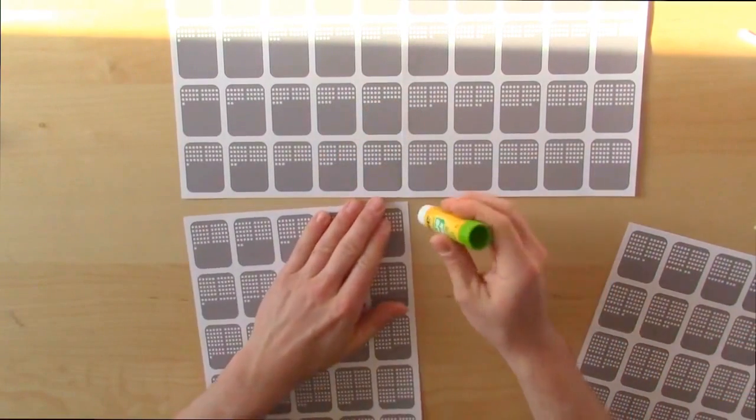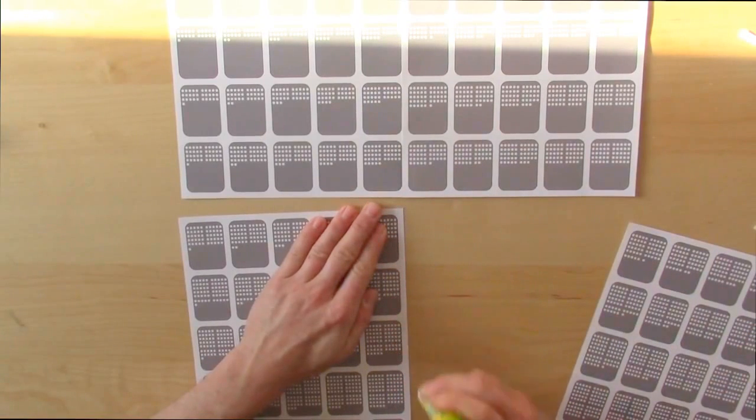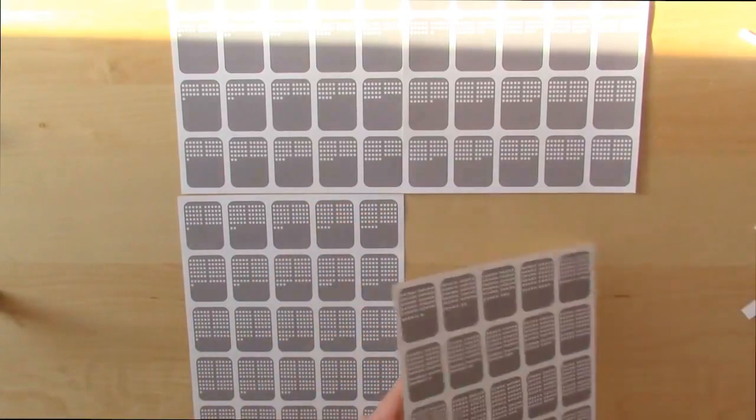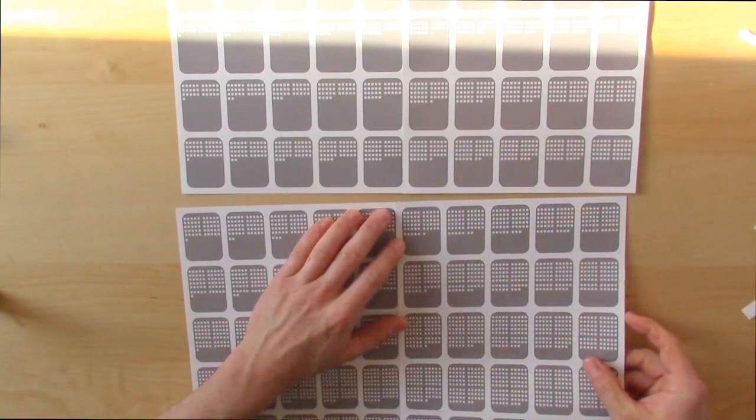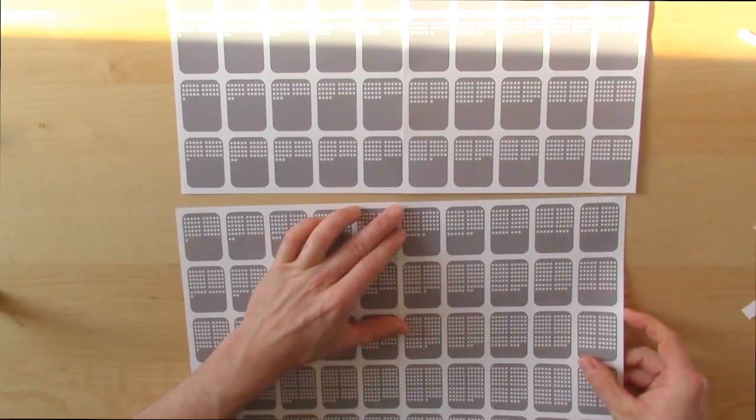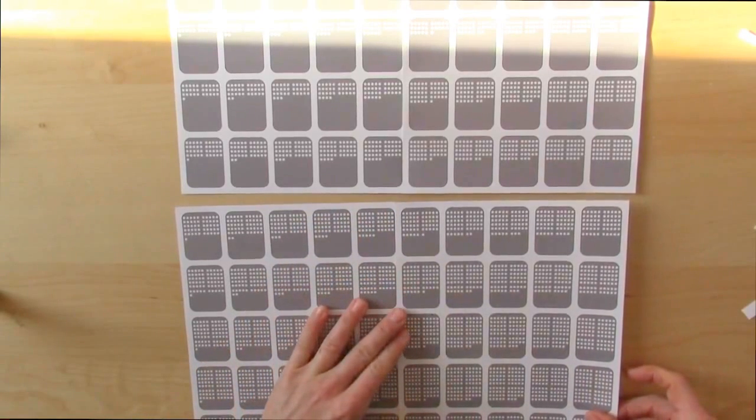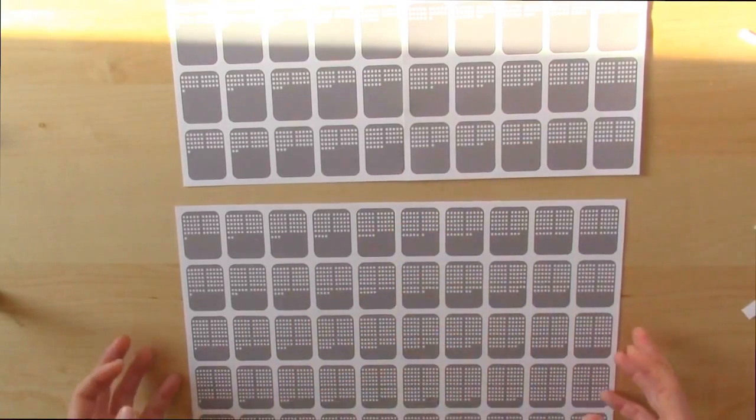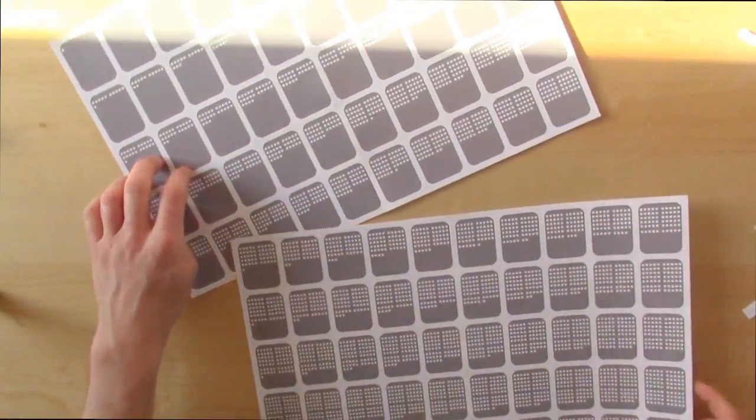And then I start with the third card running some glue down the border and again line them up so that the borders overlap leaving just the cards, the border of the card showing. There we go so now the top half and the bottom half of the hundreds chart are ready to be attached.